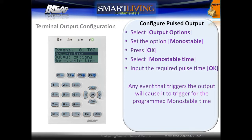Set the option for Mono Stable and press OK to save. Then select Mono Stable Time and input the required pulse time and press OK. Any event that triggers the output will cause it to trigger for the programmed mono stable time.